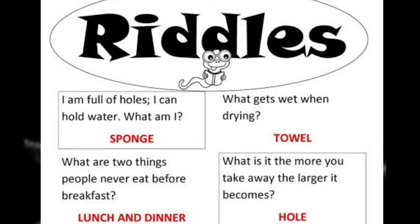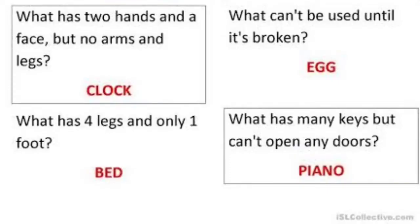Fourth, what is it? The more you take away, the larger it becomes. A hole. Fifth, what has two hands and a face, but no arms and legs? Clock. Sixth, what has four legs and only one foot? Bed. Seventh, what can't be used until it's broken? Egg. Eighth, what has many keys, but can't open any doors? Piano.